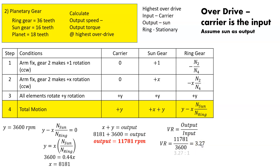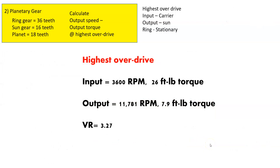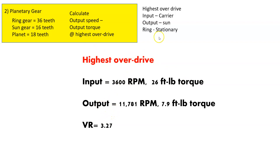Our output torque is 26 divided by 3.27, giving 7.9 ft-lbs. So our torque goes down from 26 to 7.9, but our velocity goes from 3600 to 11,781 rpm. For question number two, the highest overdrive is when we use the sun as the output and keep the ring stationary — an output of 11,781 rpm, torque of 7.9 ft-lbs.